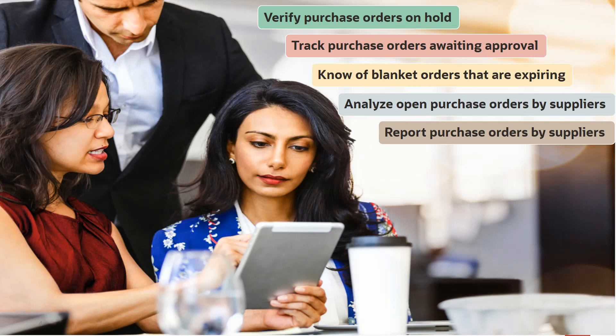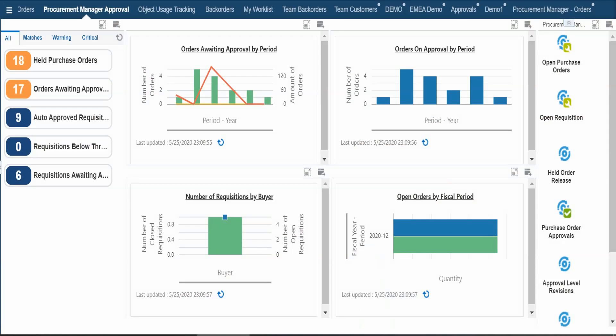Now instead of accessing different applications or batch via fast path, you can easily leverage a delivered UX1 page, personalize it, and obtain the information you need. Let's see how. Open the UX1 page delivered for the procurement manager role — that is the Procurement Manager Approval UX1 page.